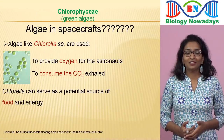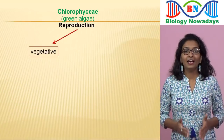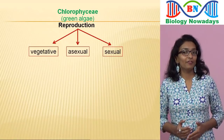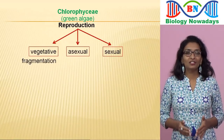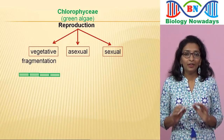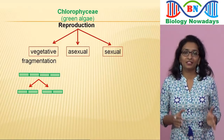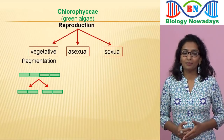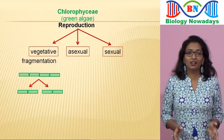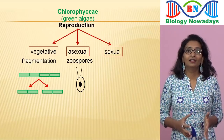Now let's learn about reproduction in algae. The algae reproduce by vegetative, asexual and sexual methods. Vegetative reproduction is by fragmentation, usually found in filamentous algae — the filamentous thallus breaks into small fragments and each fragment develops into a new individual alga. Asexual reproduction is by the production of different types of spores. The most common are the zoospores, which have flagella and are therefore motile.